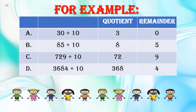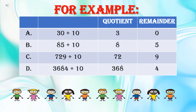In the next part, I have taken 3684 divided by 10. Children, जब भी हमने 10 से divide करना है, हमेशा ones place का digit remainder होगा। बाकि के जितने digits बचेंगे वो quotient होंगे। So 4 is the remainder, and 368 is the quotient.